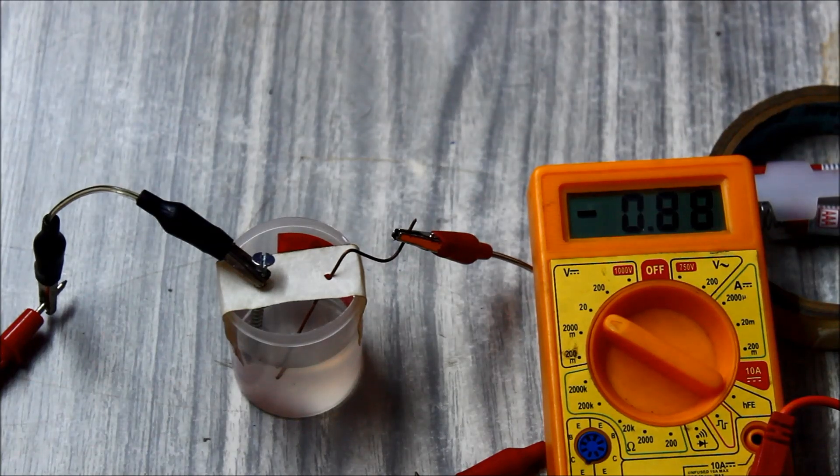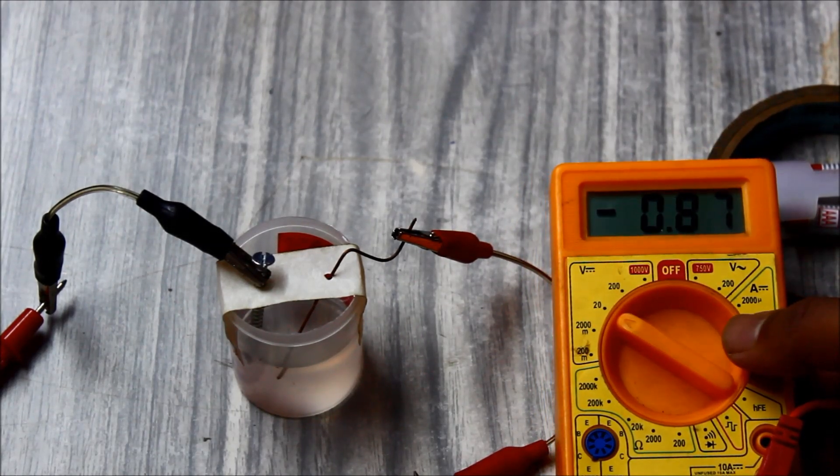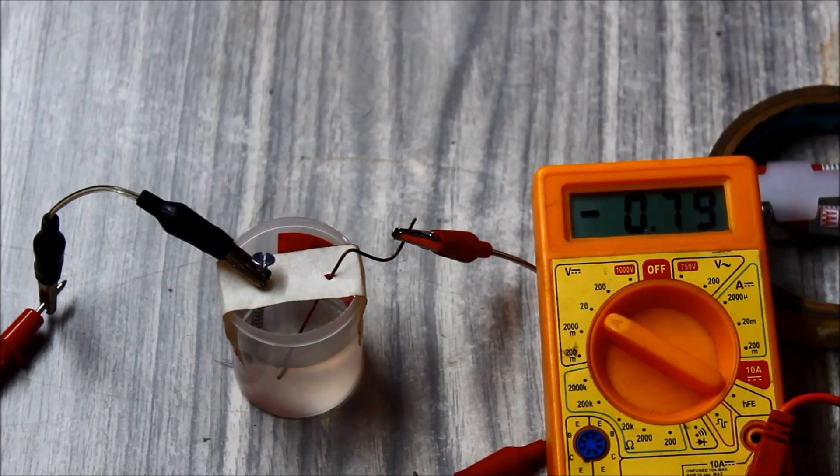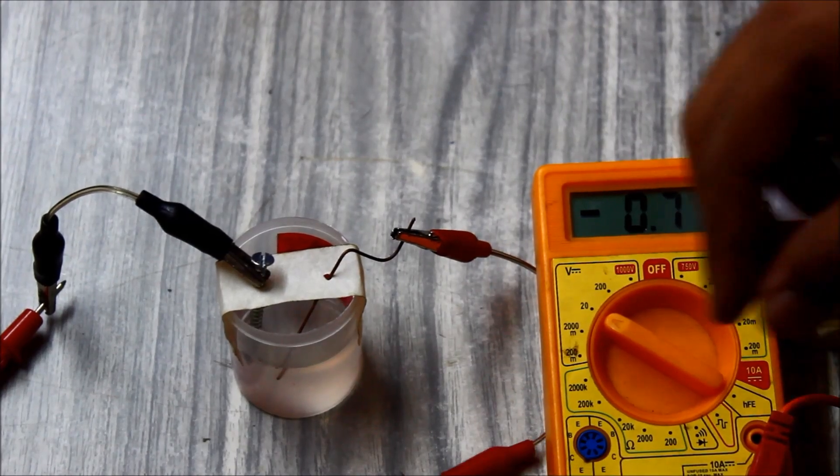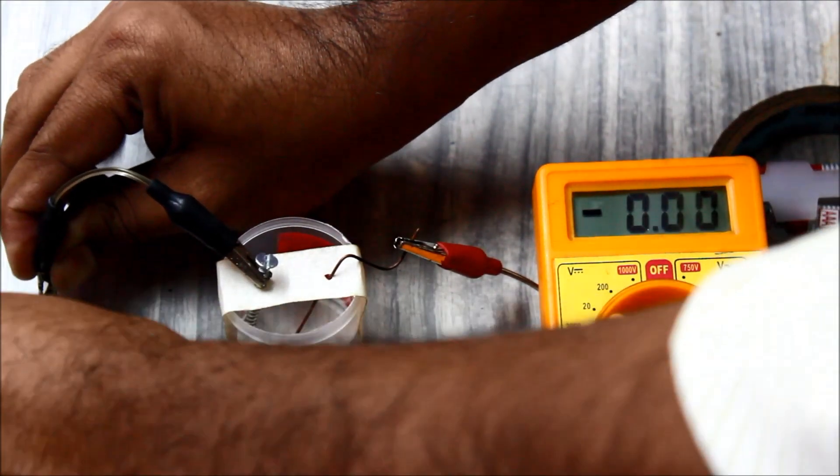I have connected randomly and the voltage is 0.89 volts. Notice that there is a minus sign which indicates that we have connected the leads to the opposite side. So we'll just reverse the leads and see what happens.